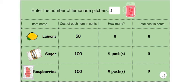Hello everyone. We now know the ingredients, the amount of ingredients, and the cost of ingredients of making one pitcher of raspberry lemonade. But what happens when we make two pitchers of raspberry lemonade? Will the cost of ingredients change?